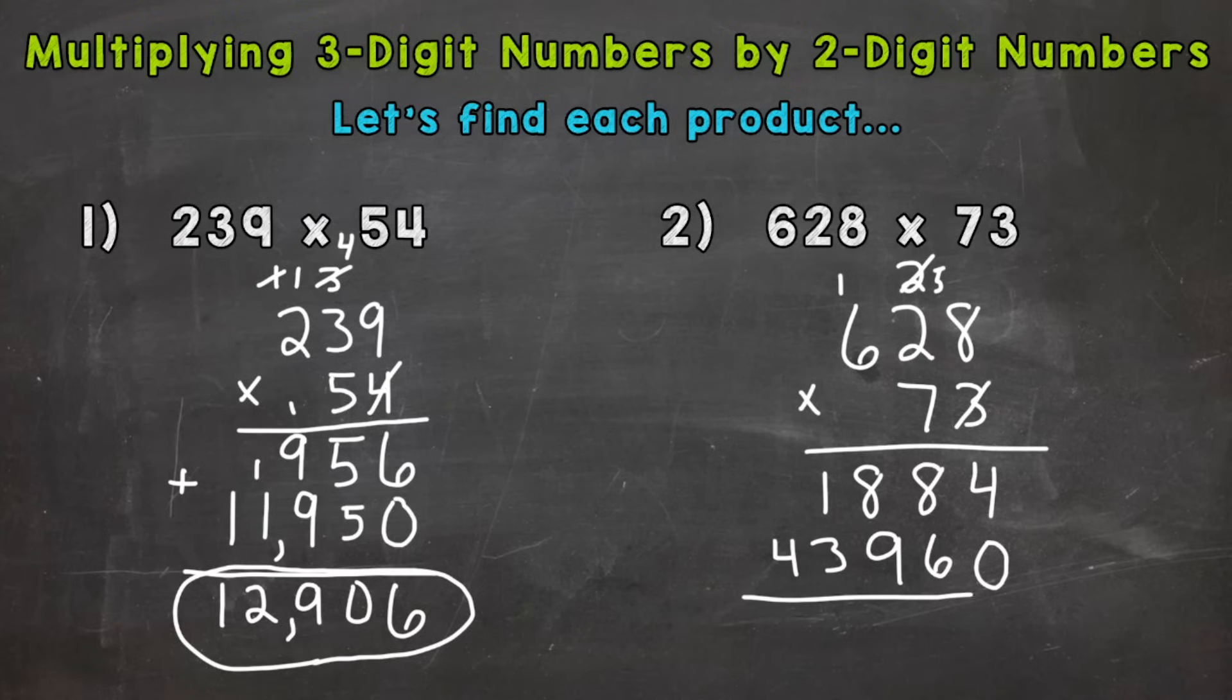So we have our partial products and we are ready to add. So 4 plus 0 is 4. 8 plus 6 is 14. 1 plus 8 is 9, plus 9 is 18. 1 plus 1 is 2, plus 3 is 5. And then we have a 4 down here. So we get a final product or answer of 45,844.